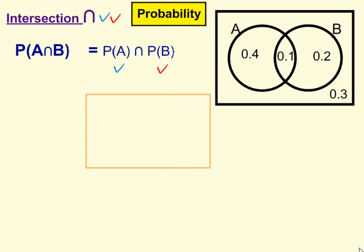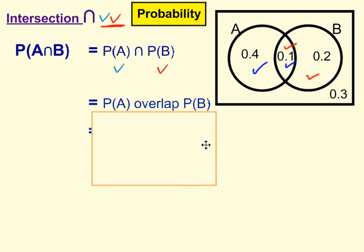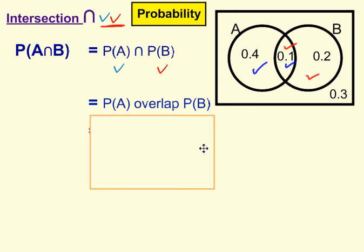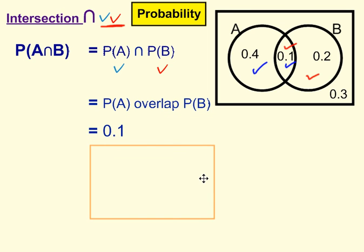Our first step is to tick everywhere that we have an A, and we'll do that in blue — that's A and that's A there inside the A circle. Next we're going to tick everywhere that is B in red, so inside the circle is that region and also that region. Now the rule for intersection is that we only care about the region that contains two ticks. We've got 0.1 as the only region with two ticks, so we can think of that as where probability of A overlaps with B, and it's 0.1.